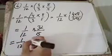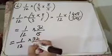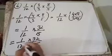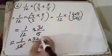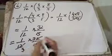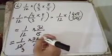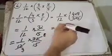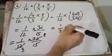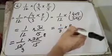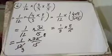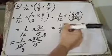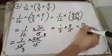अगले step में 4 के table से काटेंगे। Four threes are twelve और four eights are thirty two। तो हमारे पास आएगा one over three multiply by eight over fifteen। जवाब होगा eight over forty five।